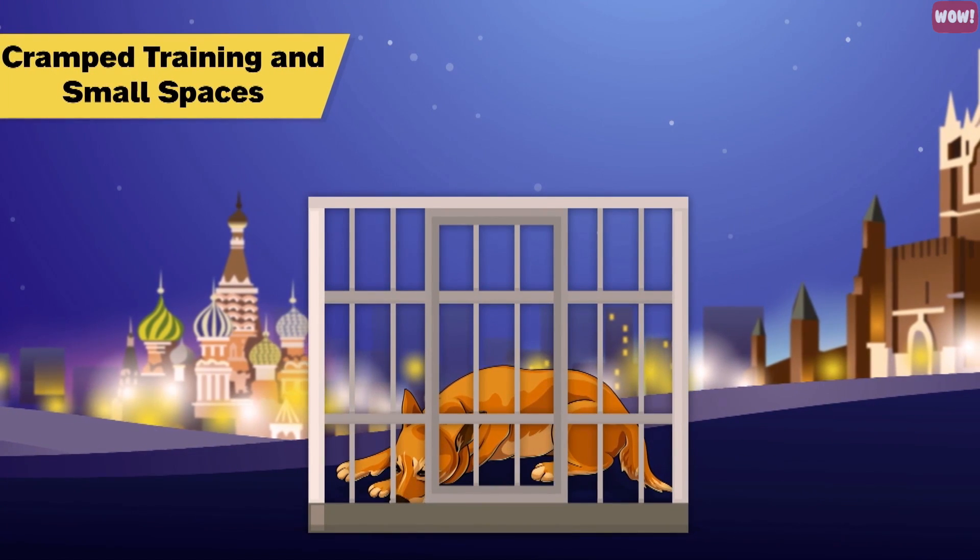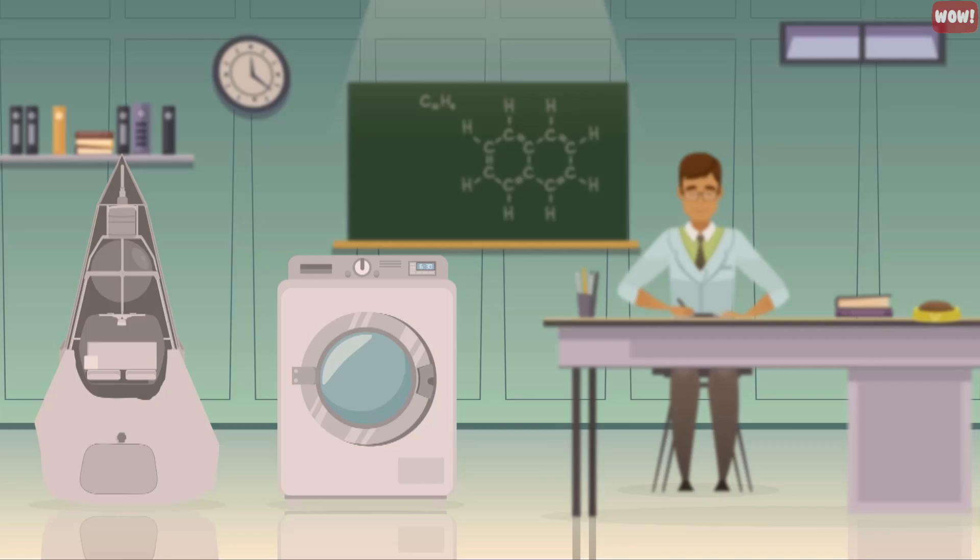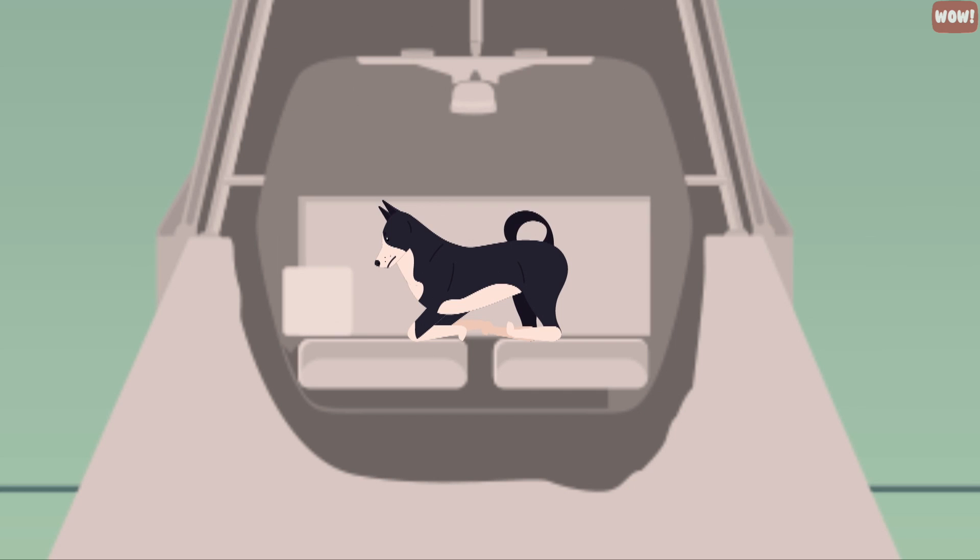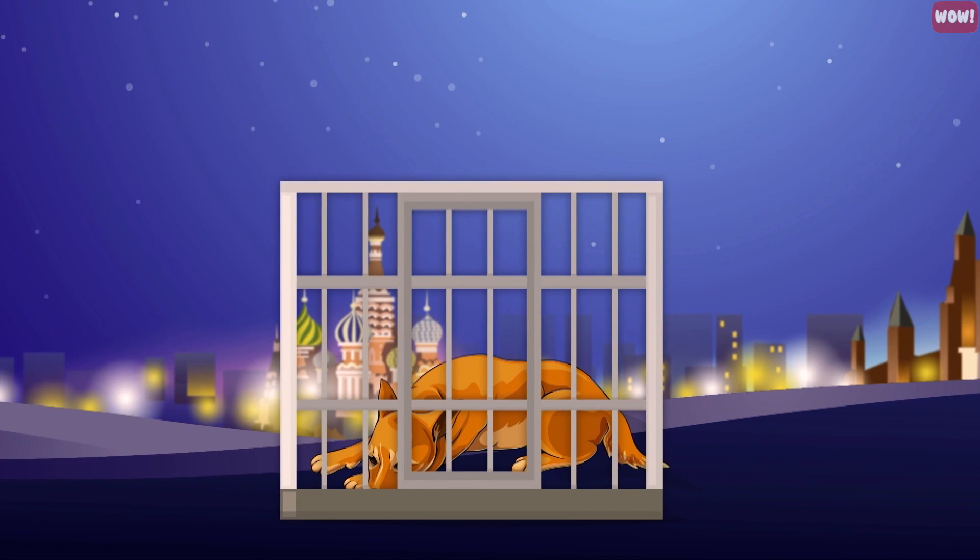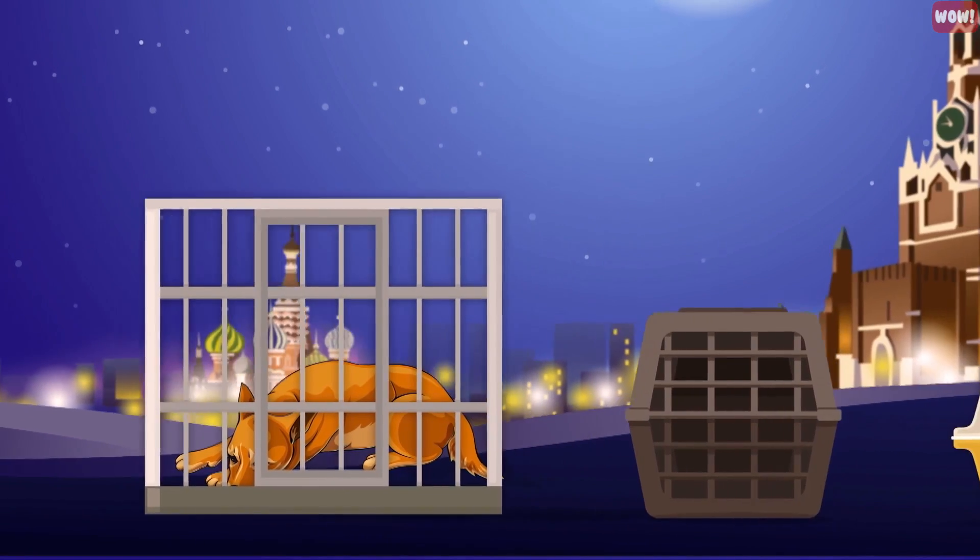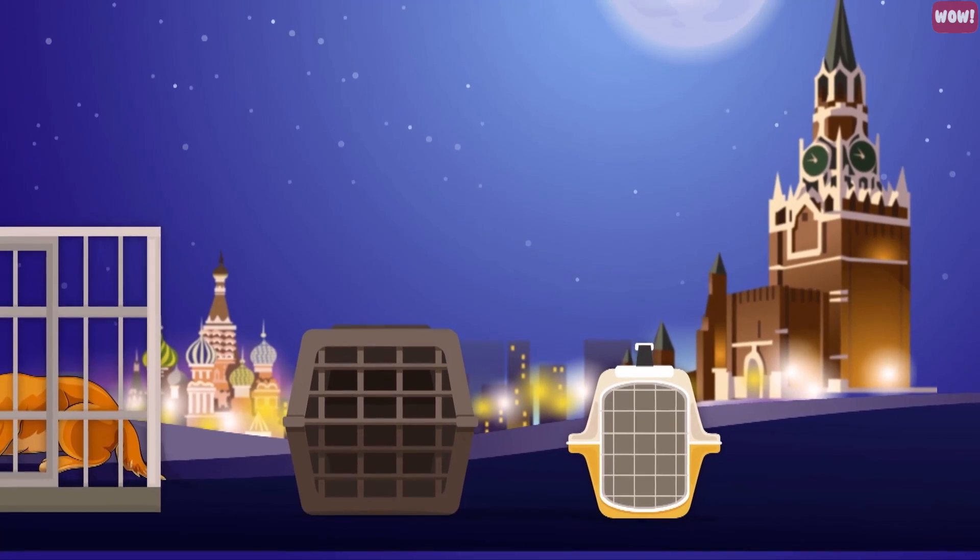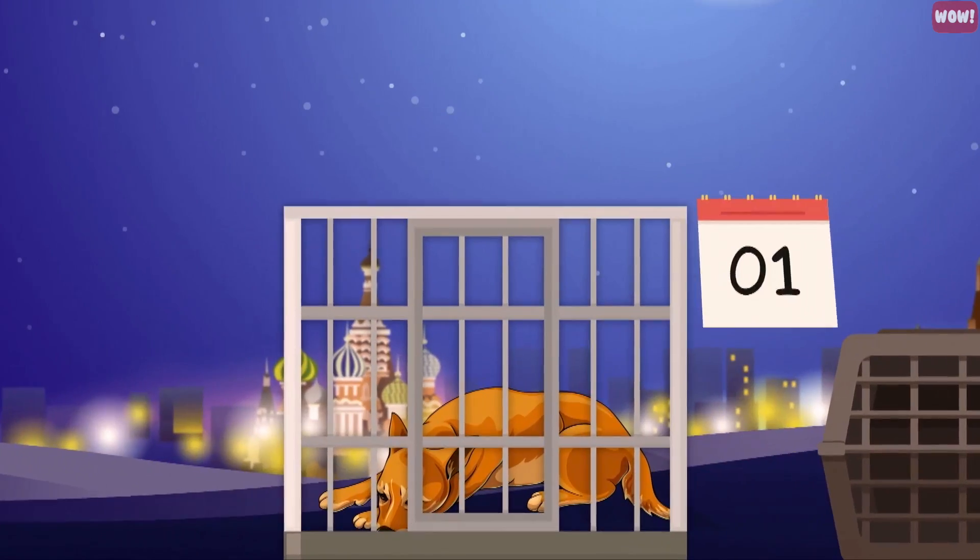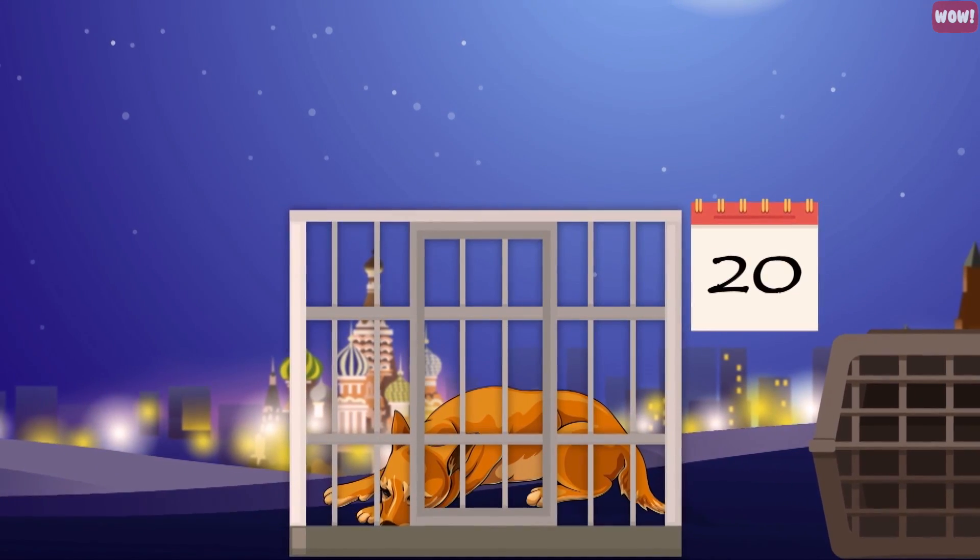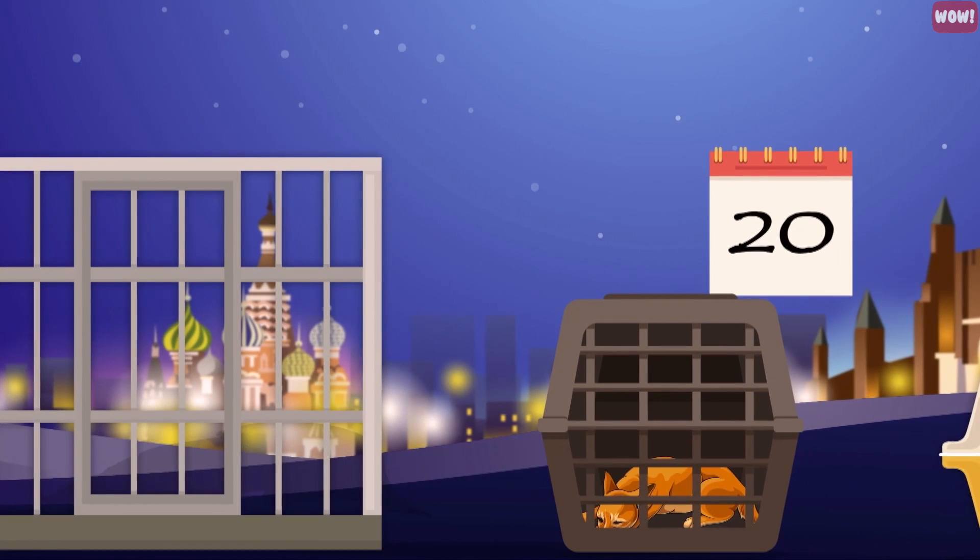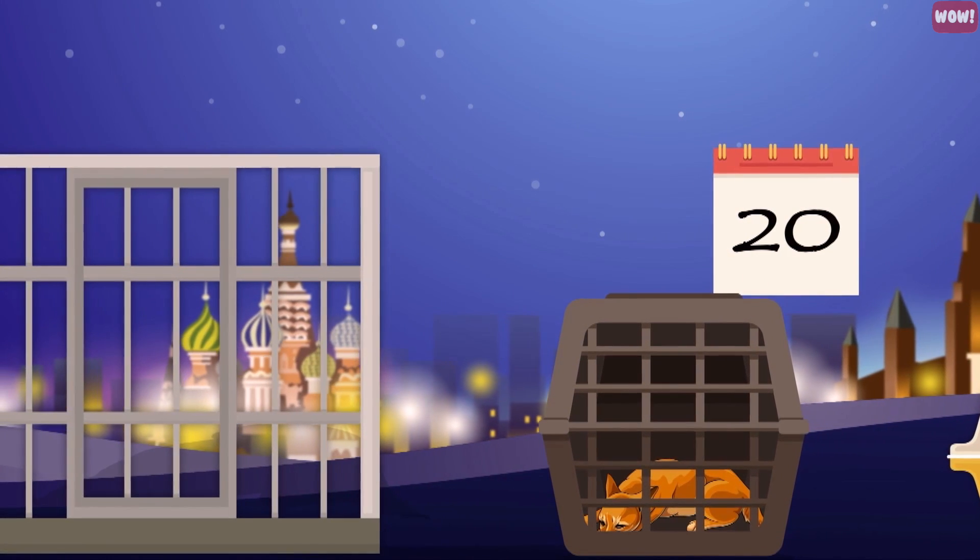Number 4: Cramped training in small spaces. Sputnik 2 was a tiny satellite, no bigger than a washing machine. This meant that Laika would not be able to turn around, and would only be able to sit and lie down, facing in one direction. To get Laika ready for the tight space that was Sputnik 2, she was transitioned through a series of smaller and smaller cages. She would be left for up to 20 days at a time in a small cage, then pulled out and immediately placed into an even smaller one.